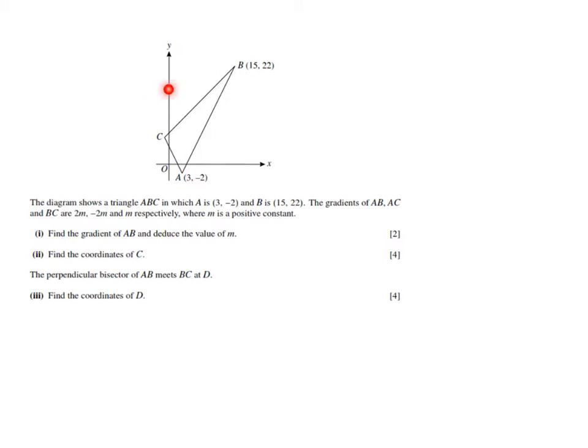Now what's going on is you can see you have this diagram here. And they say the diagram shows a triangle ABC in which A is 3 minus 2, B is 15, 22. The gradients of AB, AC and BC are 2M, minus 2M and M respectively, where M is a positive constant.